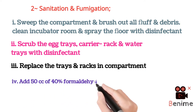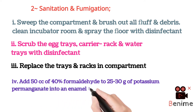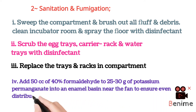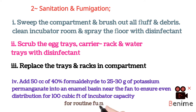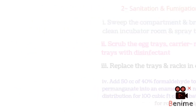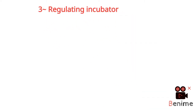For routine fumigation and sanitation of incubators, 40% formaldehyde is used. 25 to 30 grams of potassium permanganate added to 50 cc of formaldehyde is enough for 100 cubic feet of incubator capacity to fumigate this area.